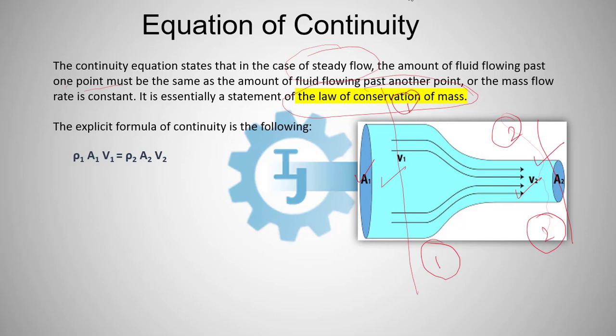So, as per continuity equation, rho 1 A1 V1 equals to rho 2 A2 V2. We will explain in details.